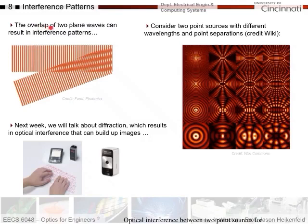The overlap of two plane waves can result in interference patterns. Here I have a plane wave, here I have a plane wave, and if I just overlap the drawings as you can see them here, you can already see some sort of pattern forming.